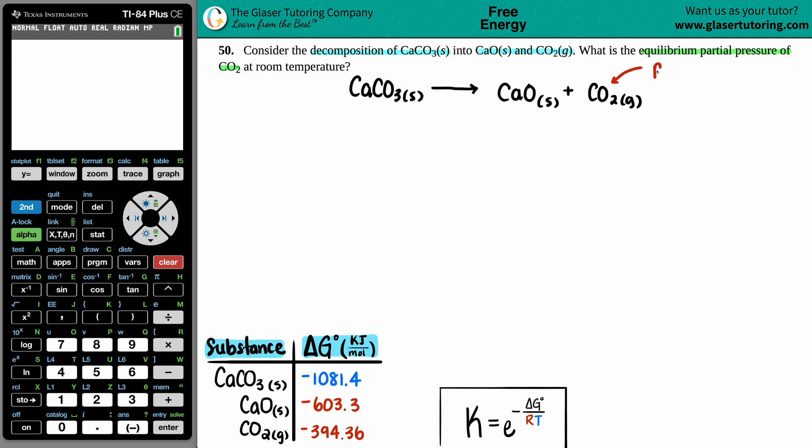Now anytime they say partial pressure, partial pressure just means that you're finding a pressure for one substance in a mixture of substances. So a partial pressure of CO2 just means that you're literally just solving for the pressure of CO2.